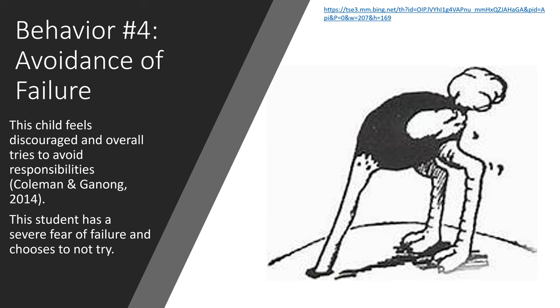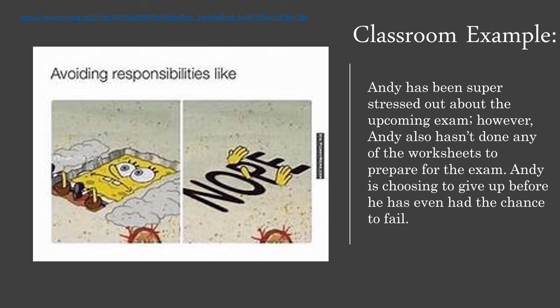The final mistaken goal is avoidance of failure. This child feels discouraged and overall tries to avoid responsibilities. This student has a severe fear of failure and decides it's better to fail sooner rather than later. In this classroom example, Andy has been super stressed out about the upcoming exam. However, Andy also hasn't done any of the worksheets to help prepare for the exam. Andy is choosing to give up before he has even had the chance to fail.